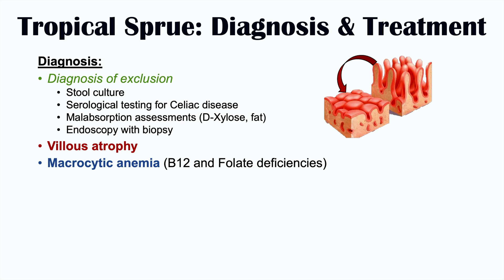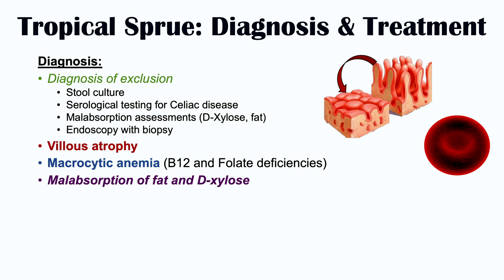A CBC will show macrocytic anemia along with associated vitamin B12 and folate deficiencies. Malabsorption studies show malabsorption of fat and D-xylose. After excluding other causes, and with findings of villus atrophy, macrocytic anemia, vitamin B12 and folate deficiencies, malabsorption of fat and D-xylose, and the patient being an inhabitant or return traveler from a tropical area, a clinician can make the diagnosis of tropical sprue.